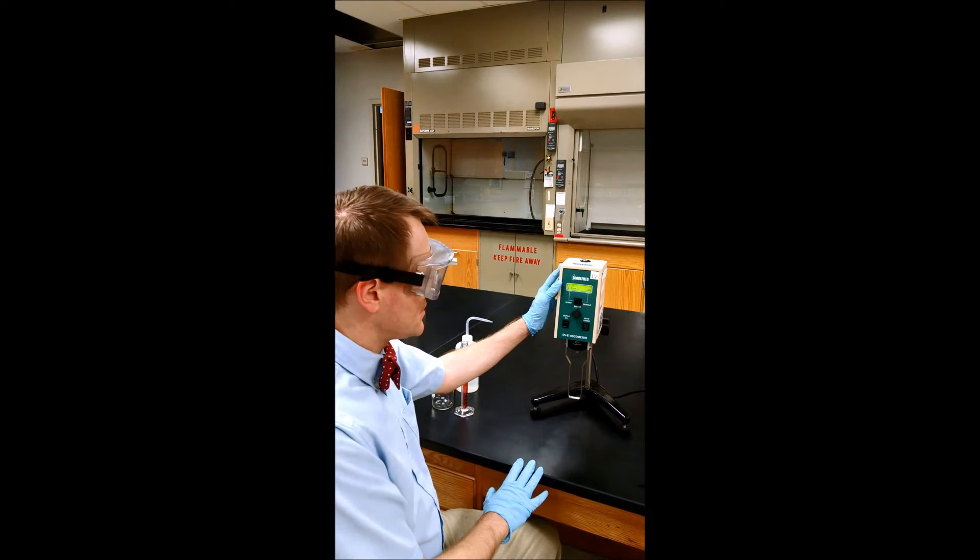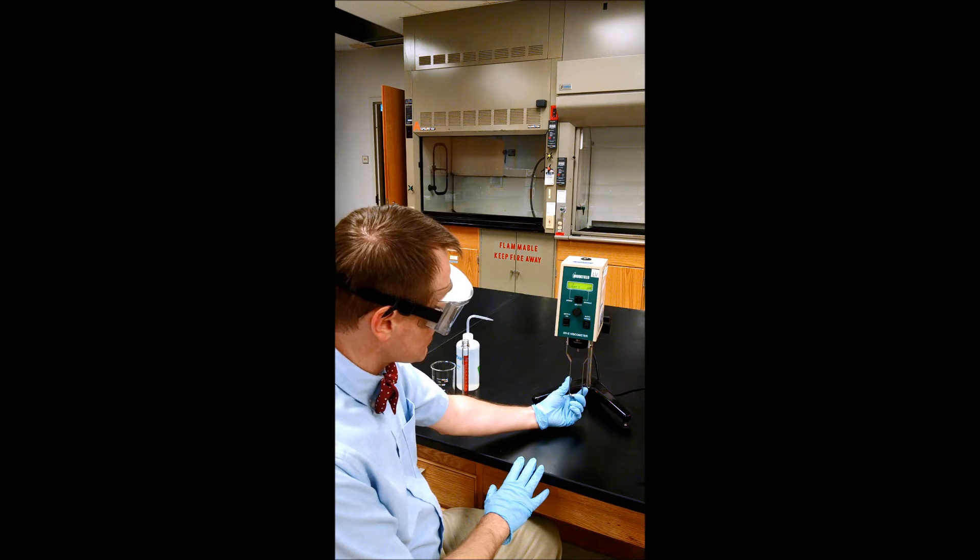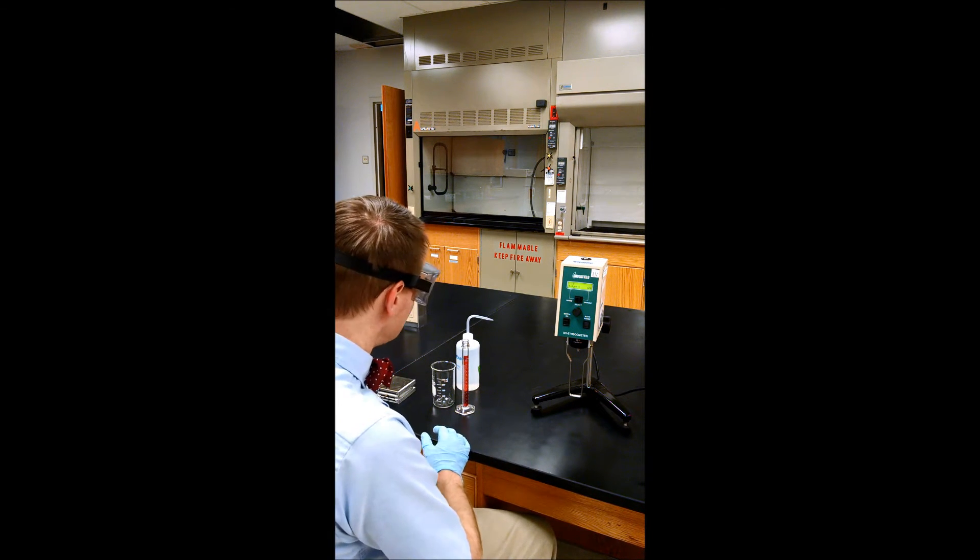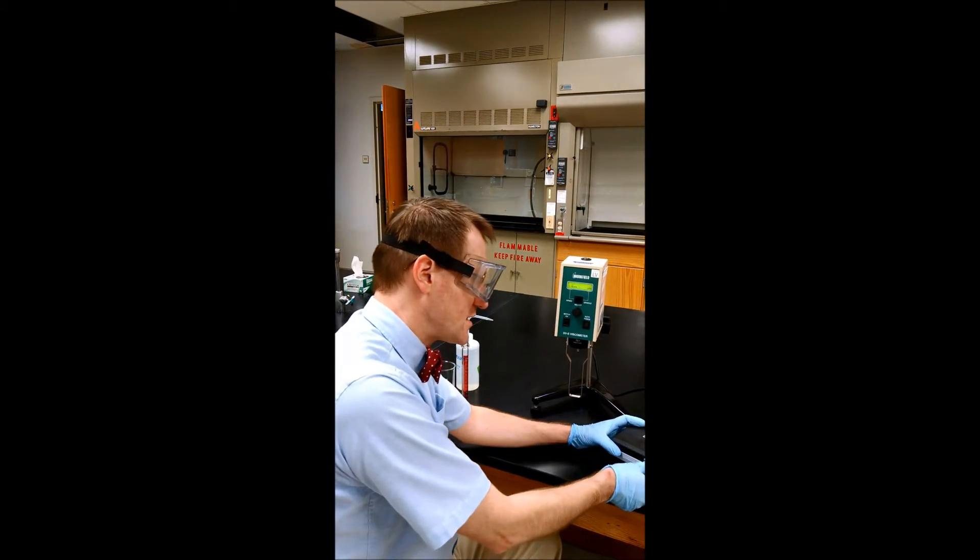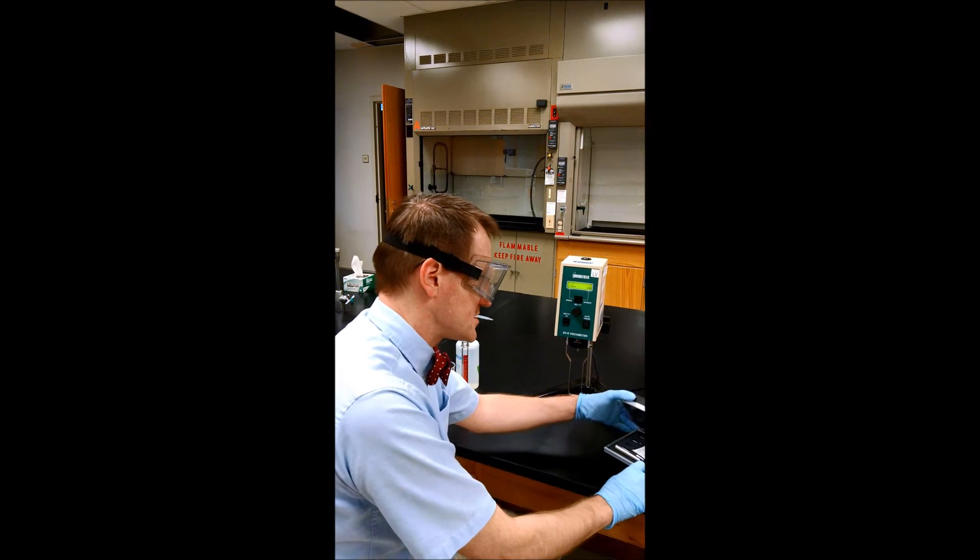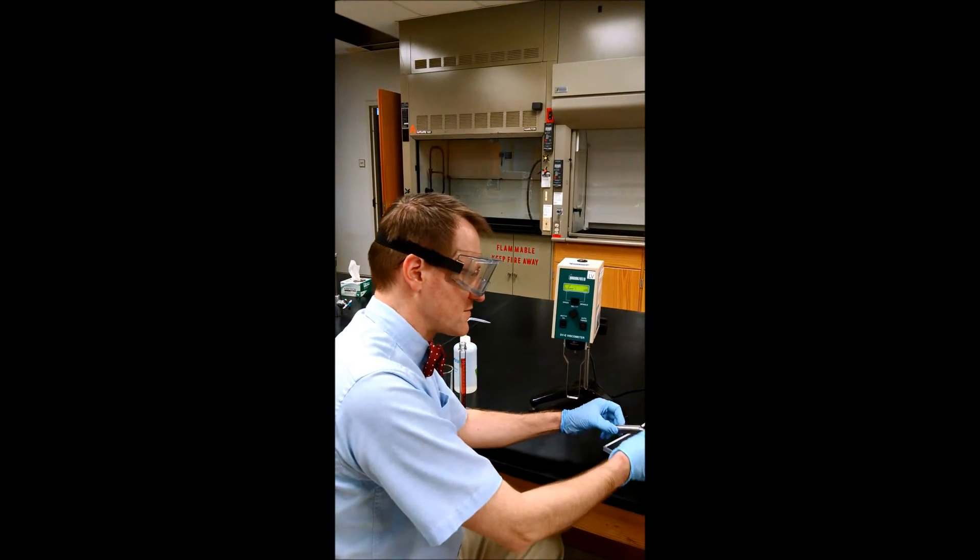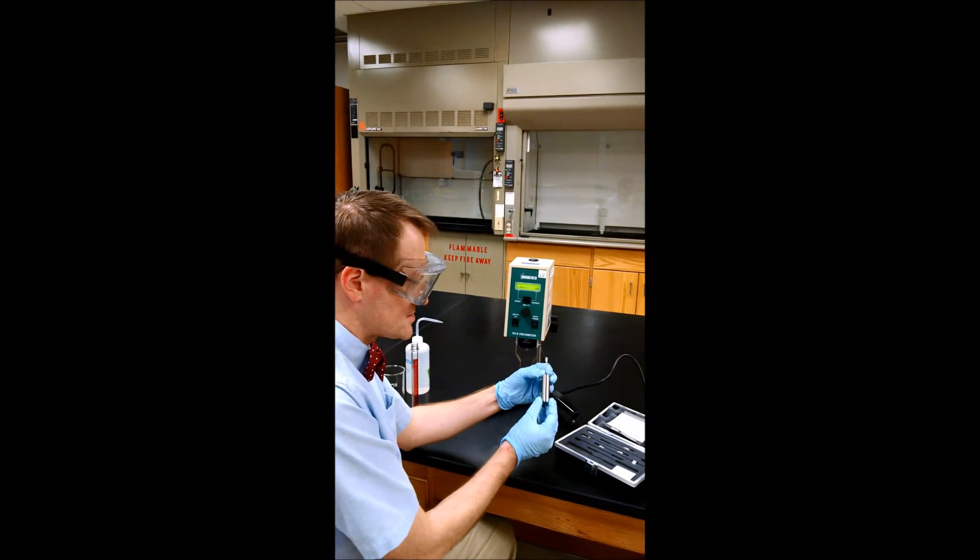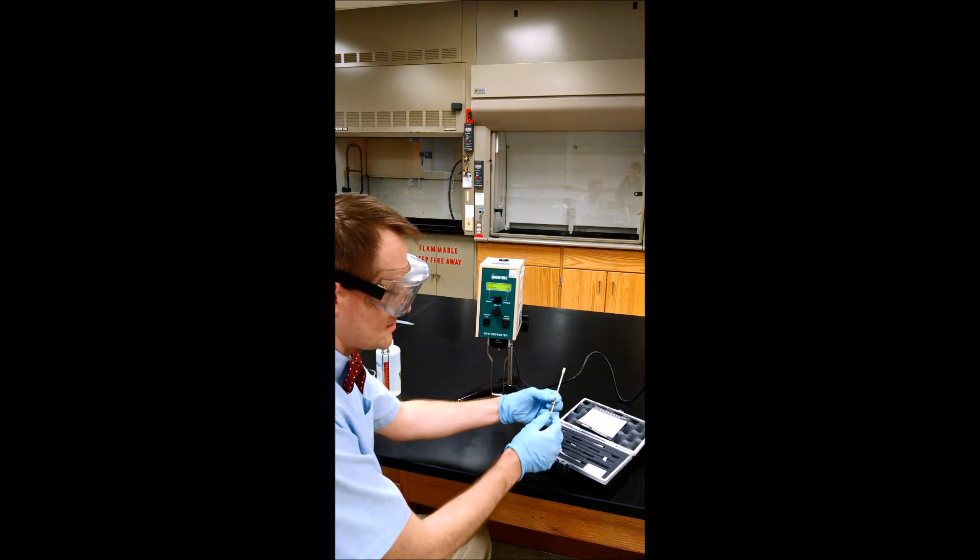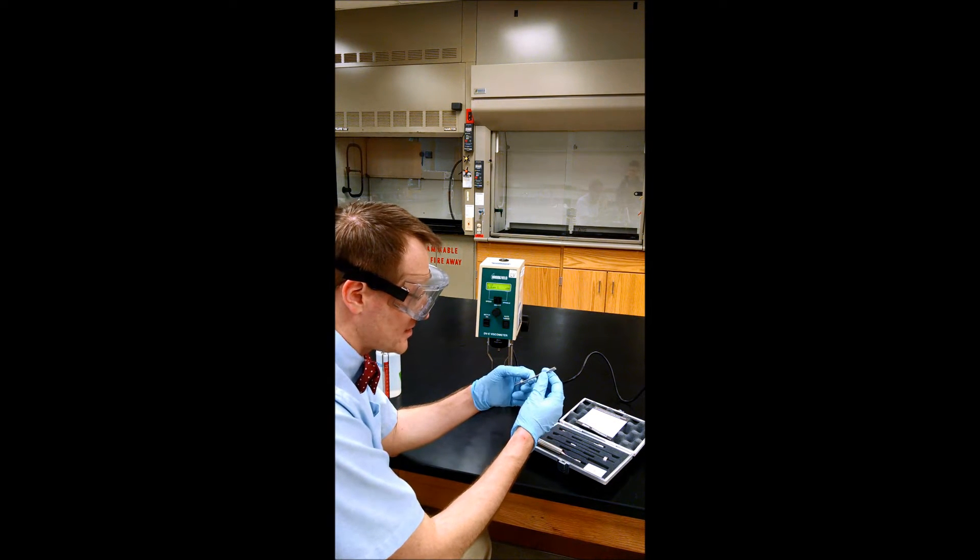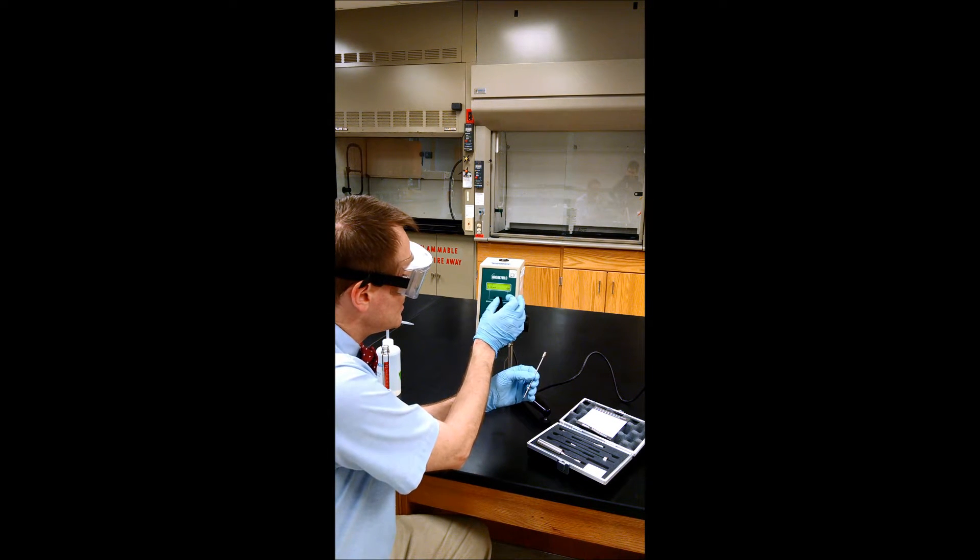In the first part of our lab we're going to use the viscometer in this setup with a spindle guard attached. We need to choose the appropriate size spindle for our material. There's a table in your handout that says which spindle to use for which type of material. You can see we have larger radius spindles, small radius spindles, and disc type spindles.